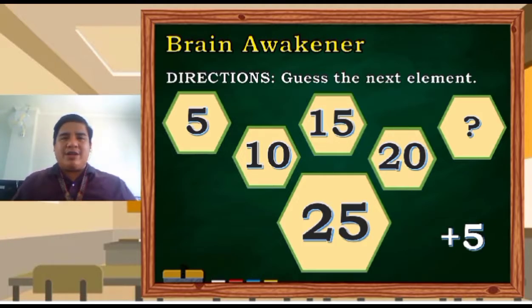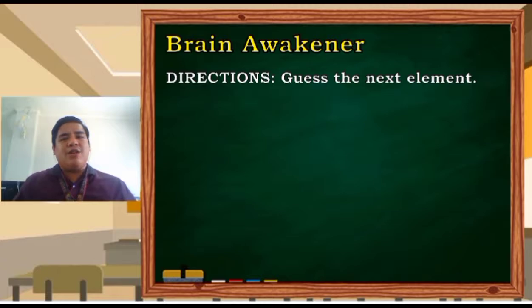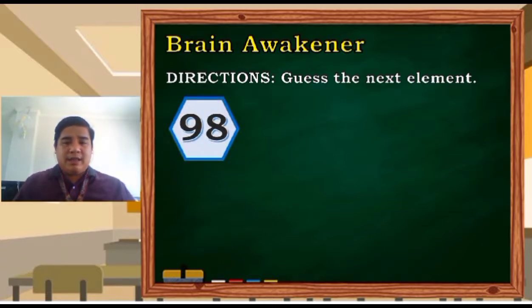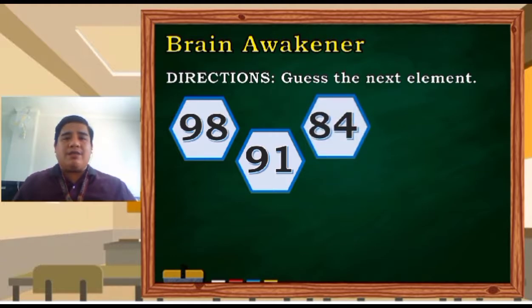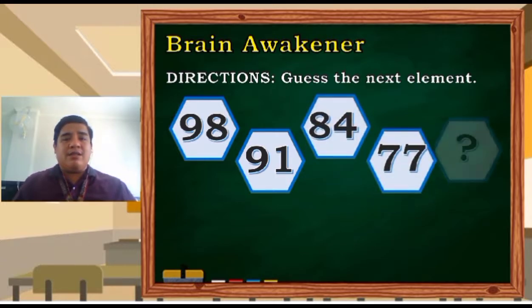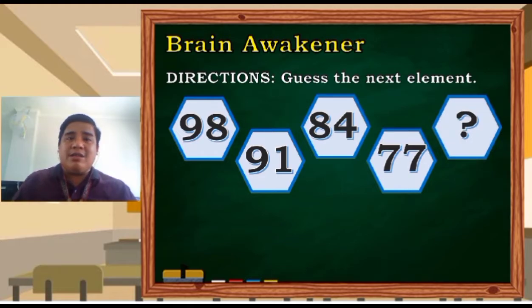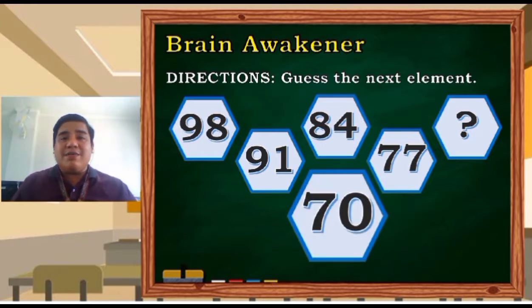What about this one? We have 98, 91, 84, 77 and the missing number. What is the missing number? We have 70. And how did we get 70? So the rule again is very easy to identify. We just subtract 7 from the preceding element.